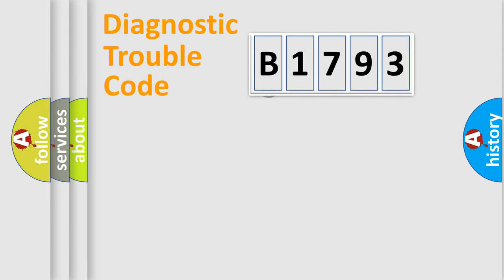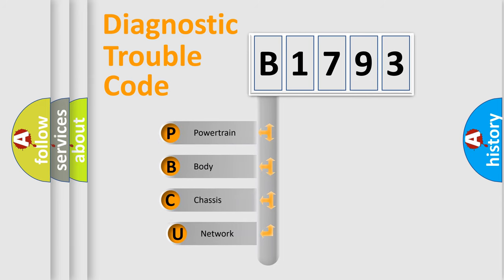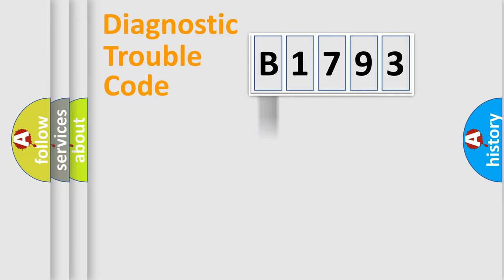Let's look at the history of diagnostic fault code composition according to the OBD2 protocol, which is unified for all automakers since 2000. We divide the electric system of automobile into four basic units: Powertrain, Body, Chassis, and Network.